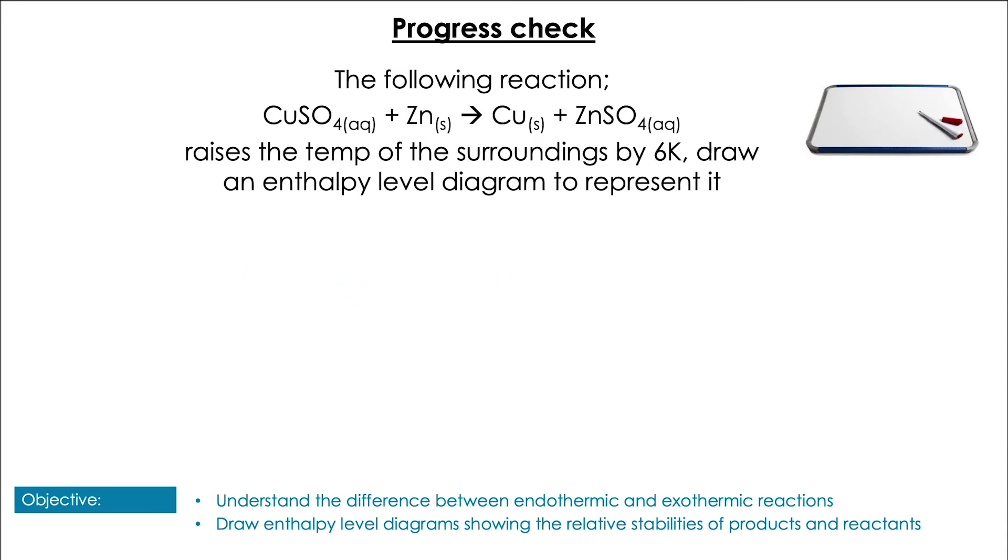Last question then: in the following reaction, the temperature is raised by 6 Kelvin, draw an enthalpy level diagram to represent it. Pause the video to have a go. In this reaction we can see that the temperature has been raised by 6 Kelvin - that means we've got an exothermic reaction. So we're just going to draw our axis, label them progress and enthalpy. Now we know if we've got an exothermic reaction the products are going to have a lower enthalpy than the reactants, making sure we're including our curve to show our activation energy.